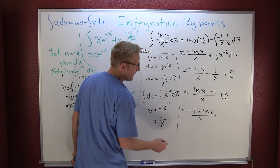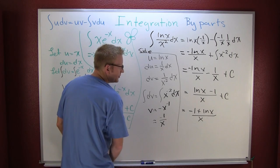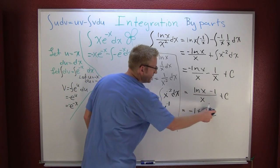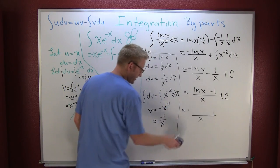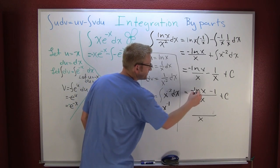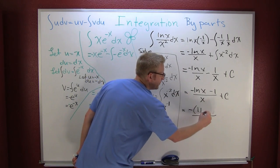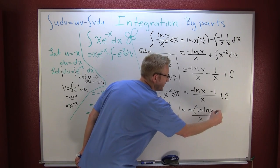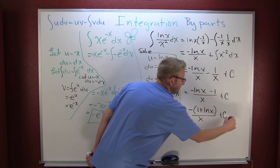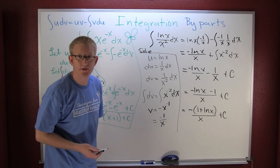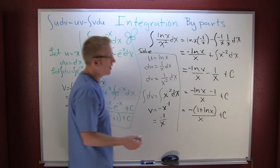And forget about it, because I can pull that minus one out of the numerator and have a minus one plus the natural log of x all over x plus c. And that looks better to me.